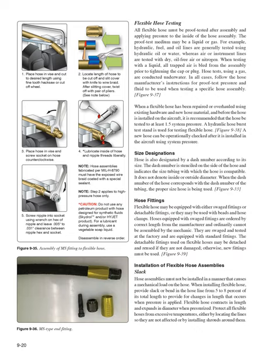Size designations: hose is also designated by a dash number according to its size. The dash number is stenciled on the side of the hose and indicates the size tubing with which the hose is compatible. It does not denote inside or outside diameter. When the dash number of the hose corresponds with the dash number of the tubing, the proper size hose is being used. Hose fittings: flexible hose may be equipped with either swaged fittings or detachable fittings, or they may be used with beads and hose clamps. Hoses equipped with swaged fittings are ordered by correct length from the manufacturer and cannot be assembled by the mechanic. The detachable fittings used on flexible hoses may be detached and reused if they are not damaged; otherwise, new fittings must be used.